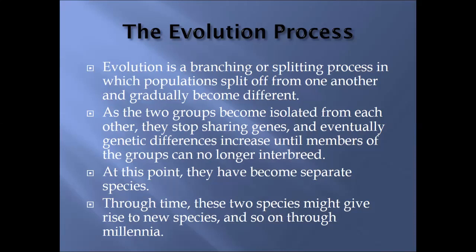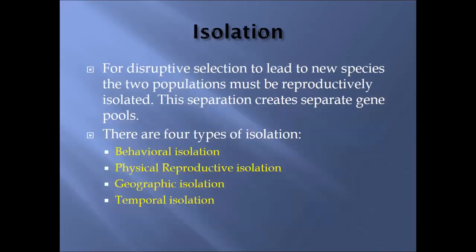When two populations can no longer interbreed, they are now separate species even though they used to share a lot in common. Through the millennia this relates to Darwin's idea of descent with modification and ultimately the idea that all organisms share a common ancestor if you go back far enough. Isolation means that two populations must be reproductively isolated — they can't breed with each other — and this separation will eventually create separate gene pools which leads to different species.